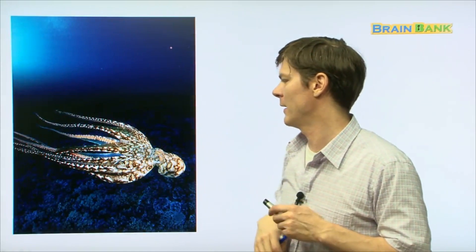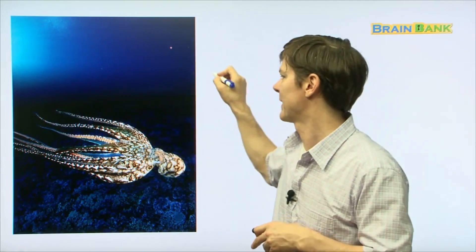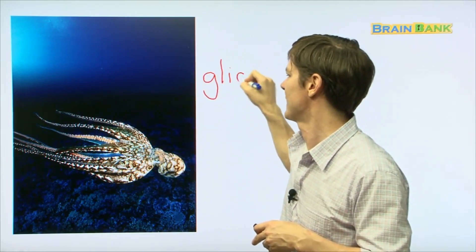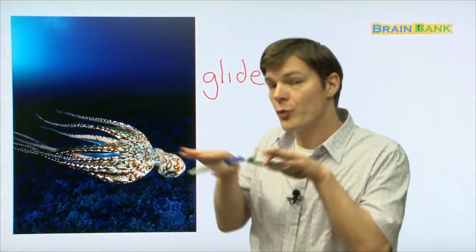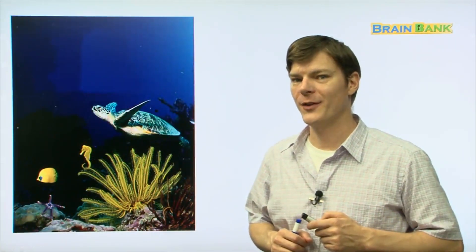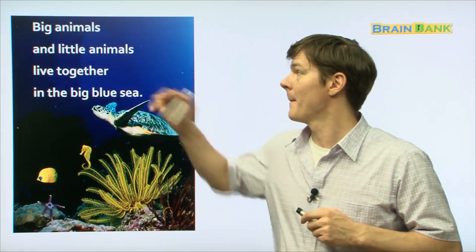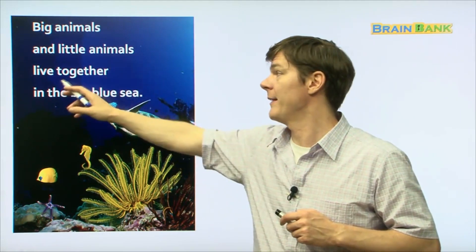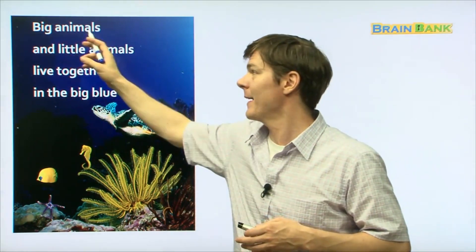There he is swimming along and it's really interesting how they swim. They kind of glide through the ocean. So boys and girls, what we've learned today are about big animals that live in the big blue sea and little animals that live in the big blue sea.